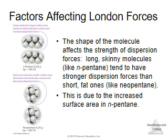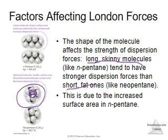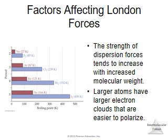The shape of a molecule affects its polarizability. Long, skinny molecules tend to have stronger dispersion forces because they're more polarizable — electrons are more likely to congregate on one side. Short, fat molecules have less surface area, so electrons are less likely to gravitate to one side. More surface area equals stronger dispersion forces. The strength of dispersion forces also increases with molar mass, because more electrons are easier to polarize — they're more likely to randomly wind up slightly more on one side.